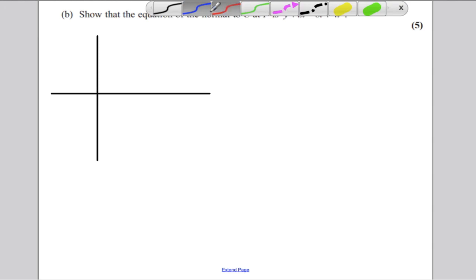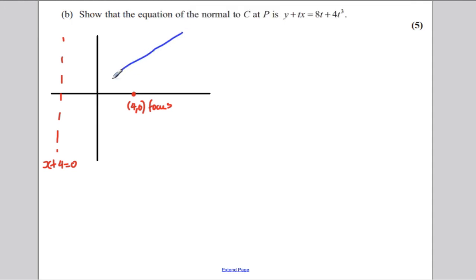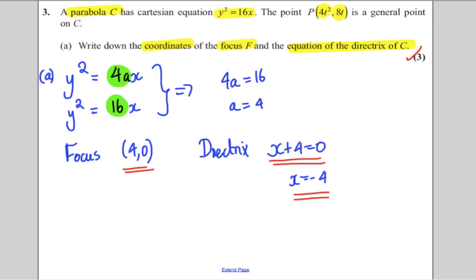Okay, we know that here, x plus 4 equals 0, that's the directrix. We know that the point here, 4,0, is the focus. And we know the curve is going to look something of that nature. And P is a point on the line here, and P has coordinates 4t squared, 8t. So, P has coordinates 4t squared and 8t.